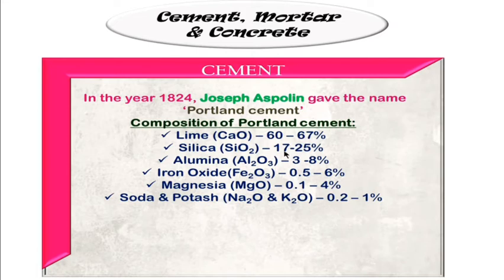Silica is 17 to 25 percent, alumina 3 to 8 percent, iron oxide 0.5 to 6 percent, and magnesia 0.1 to 4 percent.